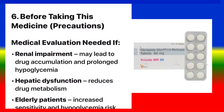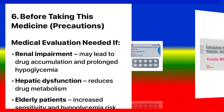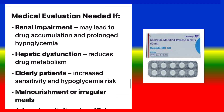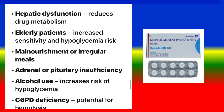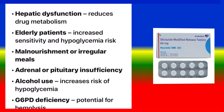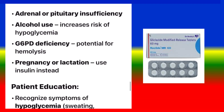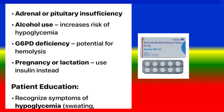Precautions — Medical evaluation needed for: renal impairment, which may lead to drug accumulation and prolonged hypoglycemia; hepatic dysfunction, which reduces drug metabolism; elderly patients, who have increased sensitivity and hypoglycemia risk; malnourishment or irregular meals; adrenal or pituitary insufficiency; alcohol use, which increases risk of hypoglycemia; G6PD deficiency, due to potential for hemolysis. During pregnancy or lactation, use insulin instead.